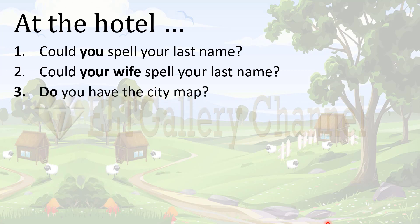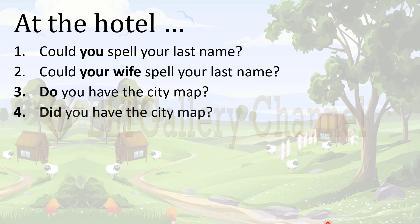'Do you have the city map?' Here the commodity the clause expresses is goods and services. The addresser wants to have the city map and asks the receptionist to provide it. But what if we change the sentence to 'Did you have the city map?' With the change of tense from present to past, the sentence is no longer about the commodity of goods and services.